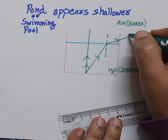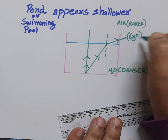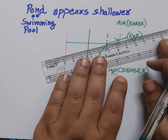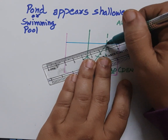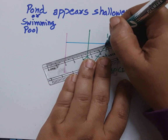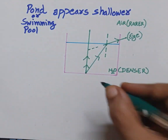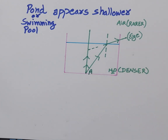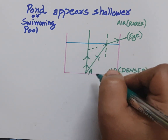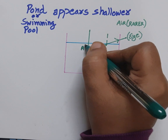As the ray of light enters from denser to rarer medium, it will bend away from the normal. We will draw it away from normal. This ray will fall on the human eye, and we will retrace it backwards with a dotted line. It will appear to us that the point at the bottom of the pond, that is point A, is at a raised level at point A dash.